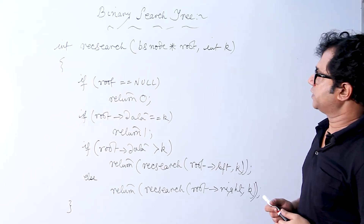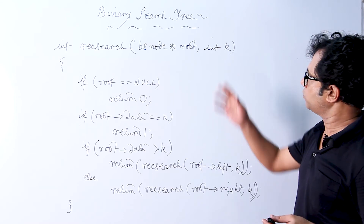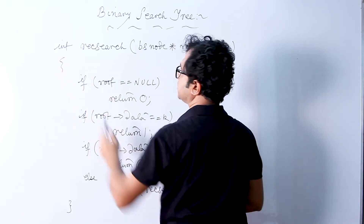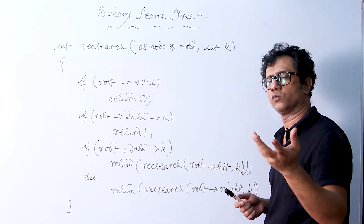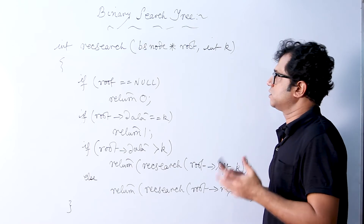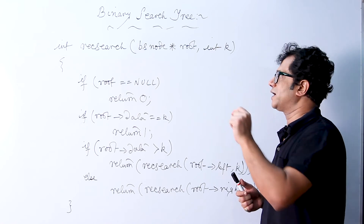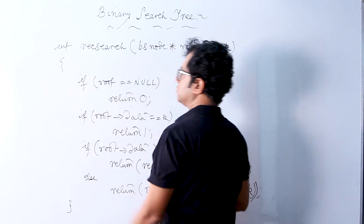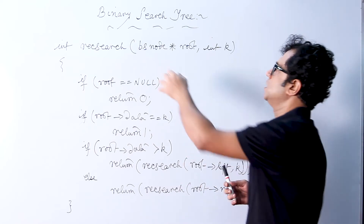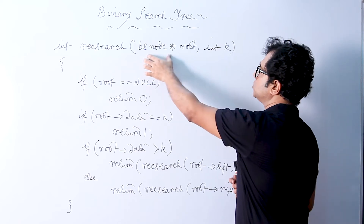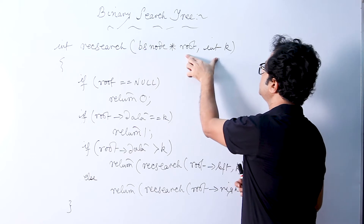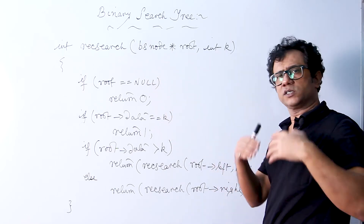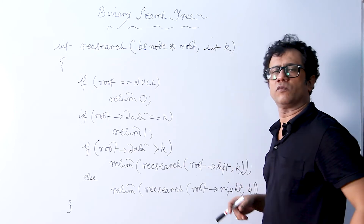Now I am going to write this entire operation as a C function — a recursive function. I have taken the return type as int, because I am going to return 1 if the search is successful and 0 if the search is a failure. I have named the function rec_search, which resembles the operation — recursive search. We have taken two formal arguments: BSNode* root and int k.